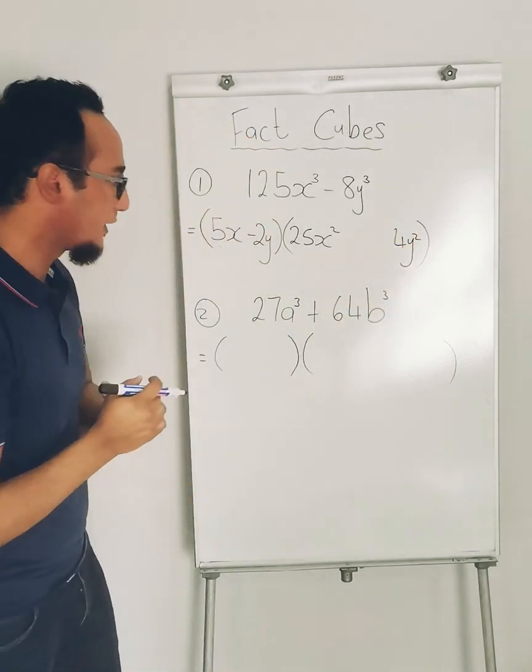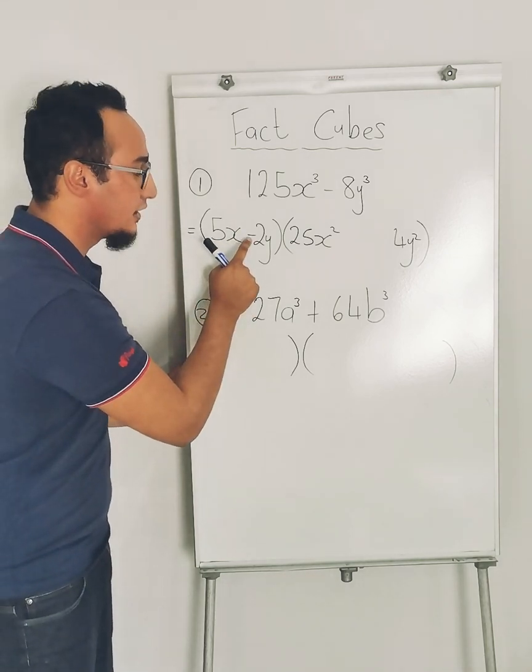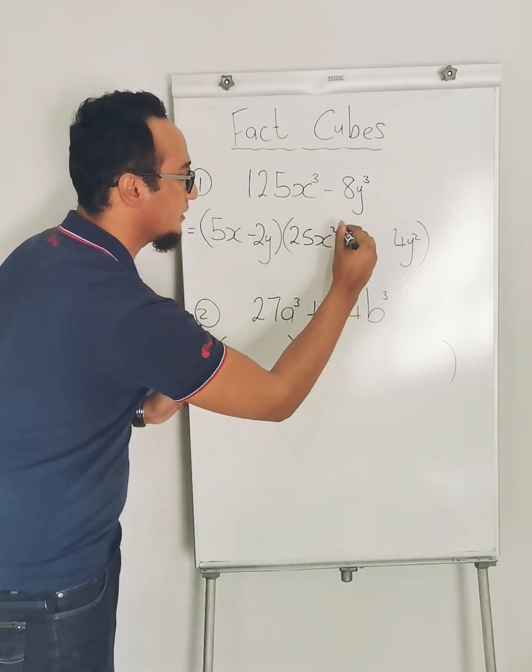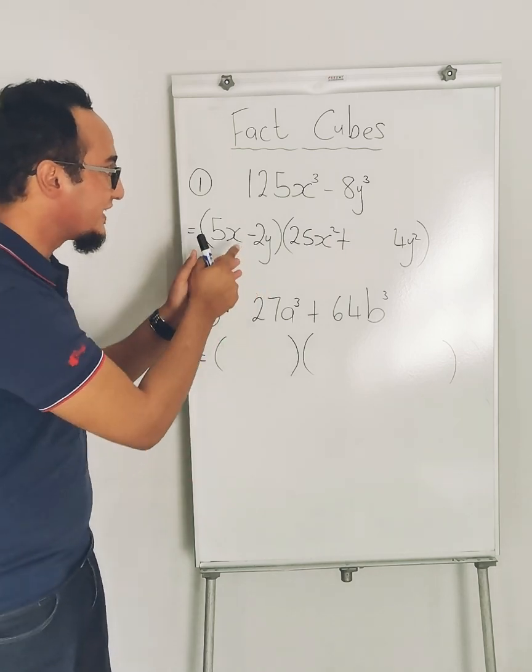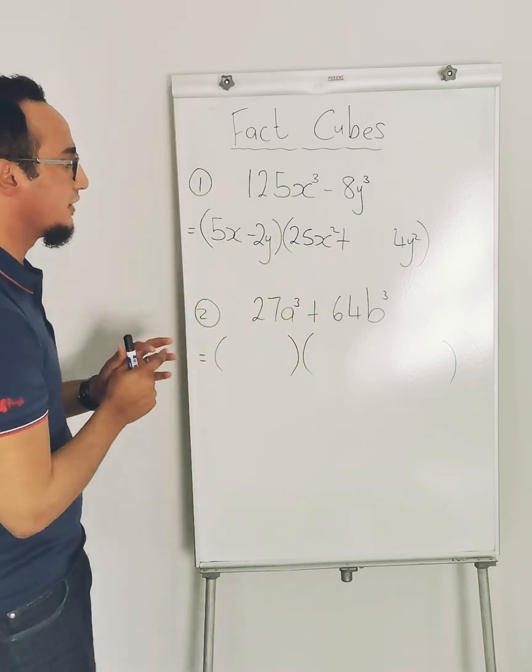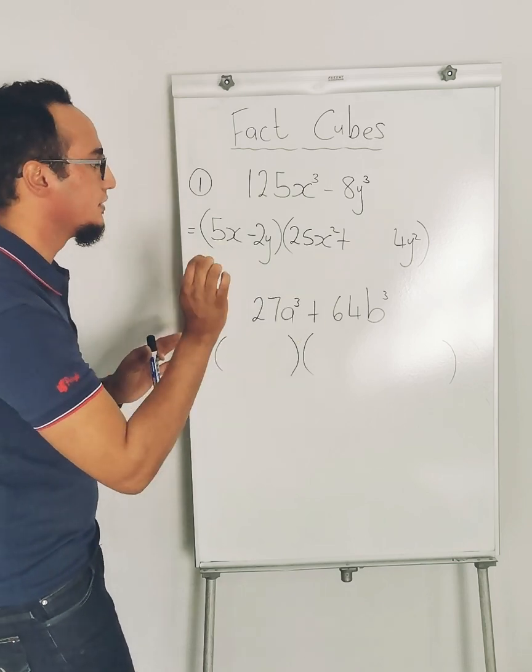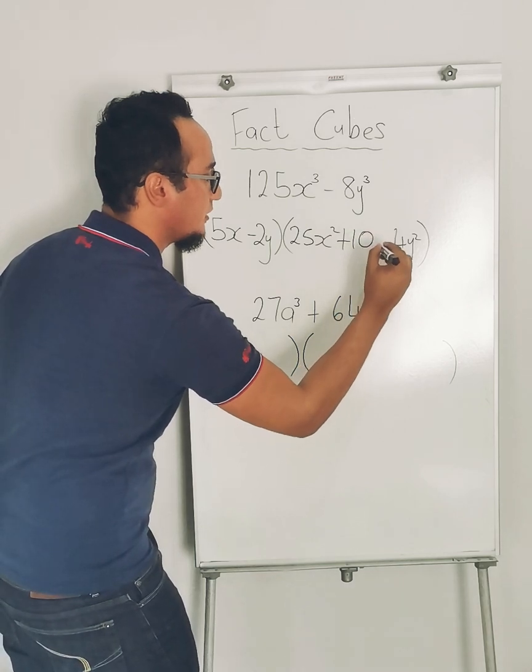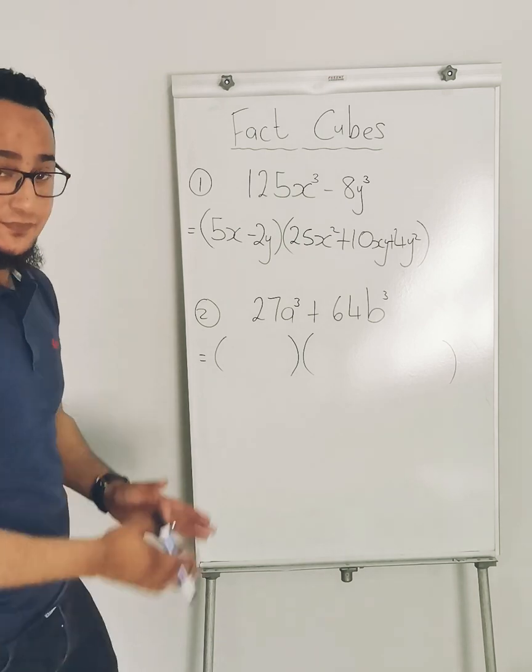Now this becomes a little bit more tricky. What sign is this? A negative, meaning that the opposite side of a negative would be a positive. Keep that in mind: always whatever this sign is, this one has to be different. Then I multiply these two together and that will give me my middle term. So 5x times 2y is equal to 10xy, and that must also always be a positive.